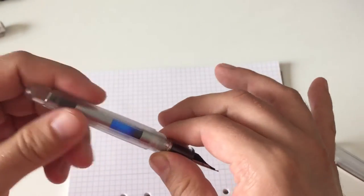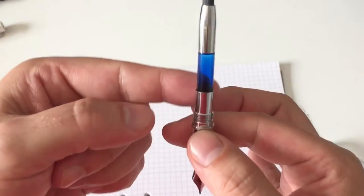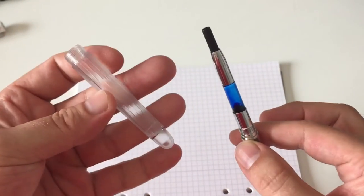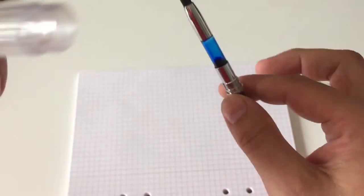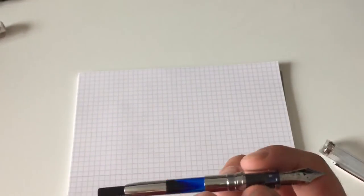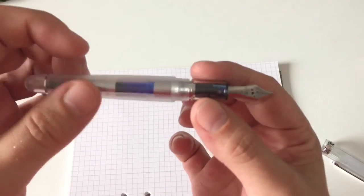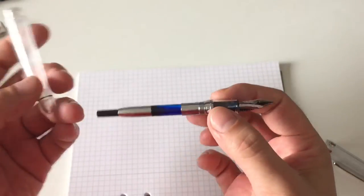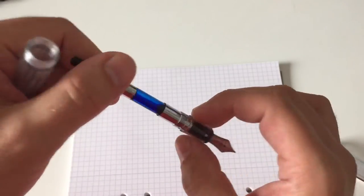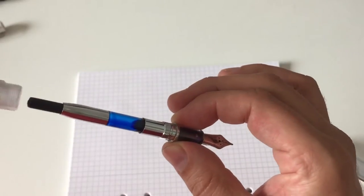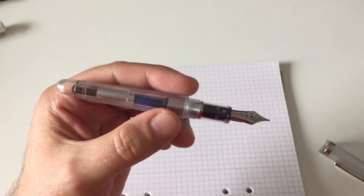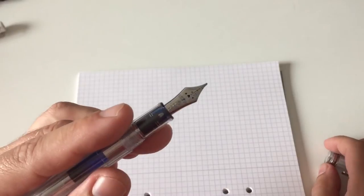As a last step, let's open the pen and you see the Platinum converter. It's a demonstrator pen, it's transparent, so you might want to convert it into an eyedropper. But as you see, those inner parts here are metal, so I would not convert that pen into an eyedropper because the metal will most certainly react with ink. So this is the converter in here. As I said, Diamine Mediterranean blue.